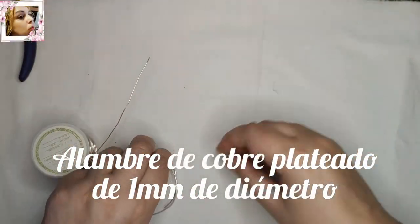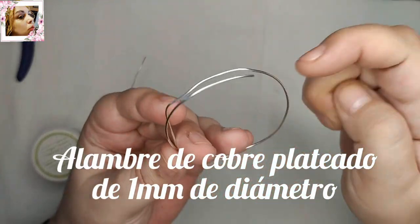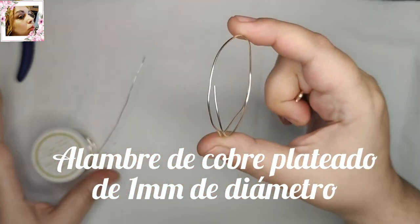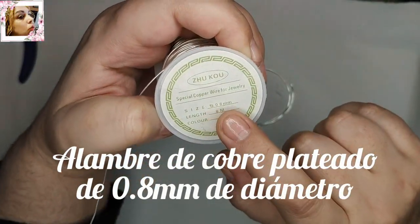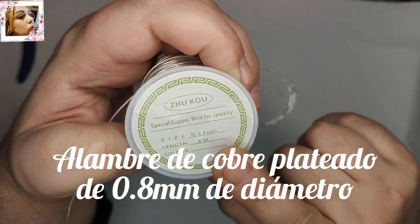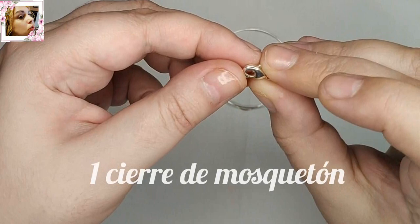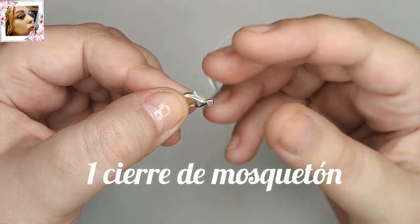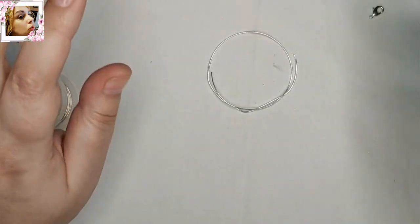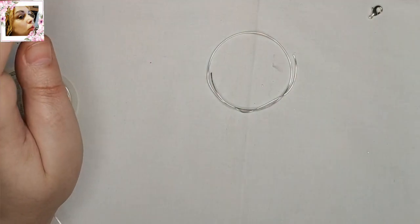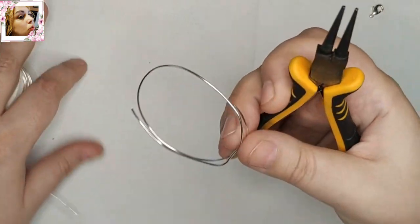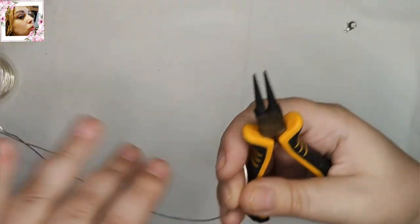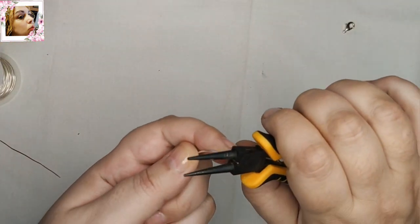Para este trabajo voy a usar alambre de cobre plateado de 1 mm de diámetro, alambre de cobre plateado de 0.8 mm de diámetro, un cierre de mosquetón. Y luego ya si queréis podéis usar avalorios con un alambre más fino. O no, yo en mi caso no lo voy a utilizar. El alambre de 1 mm lo vamos a usar para hacer colgantes.